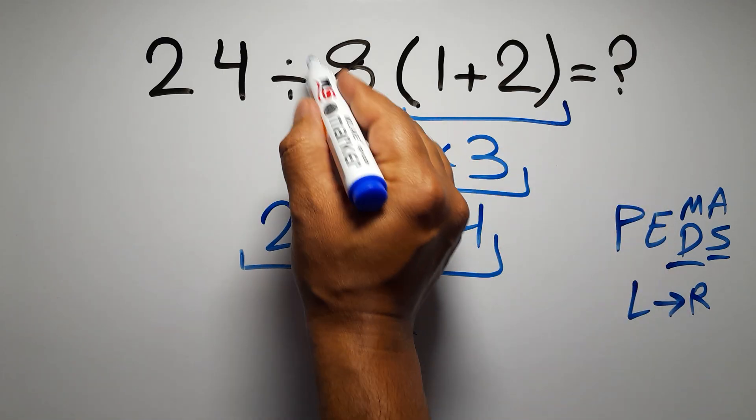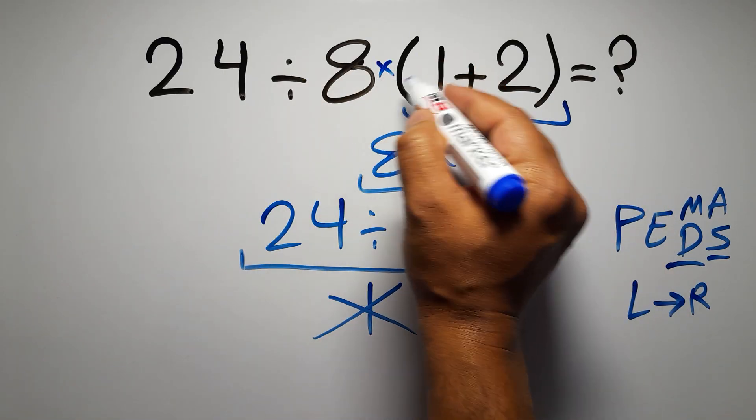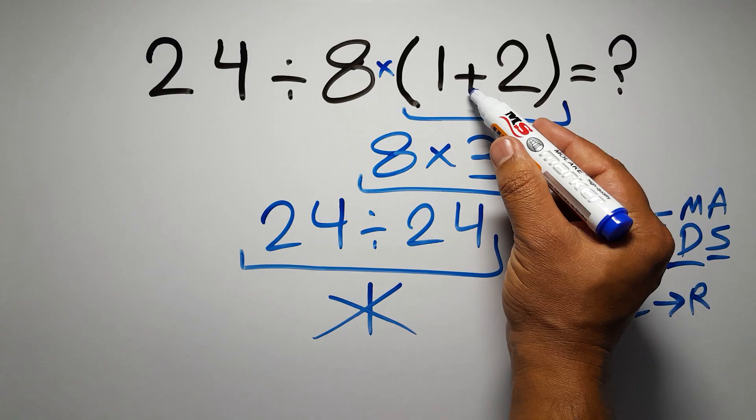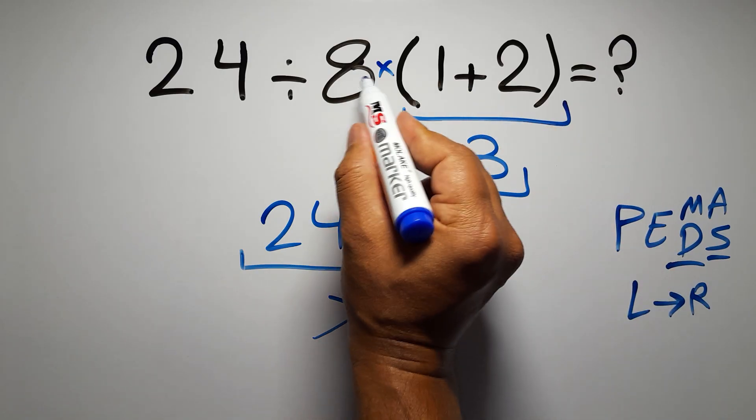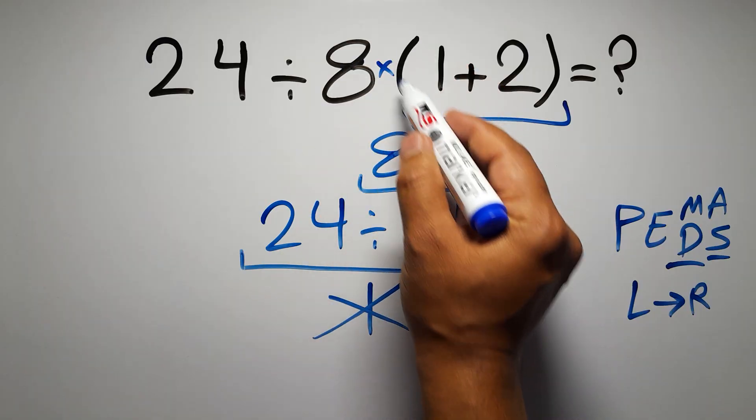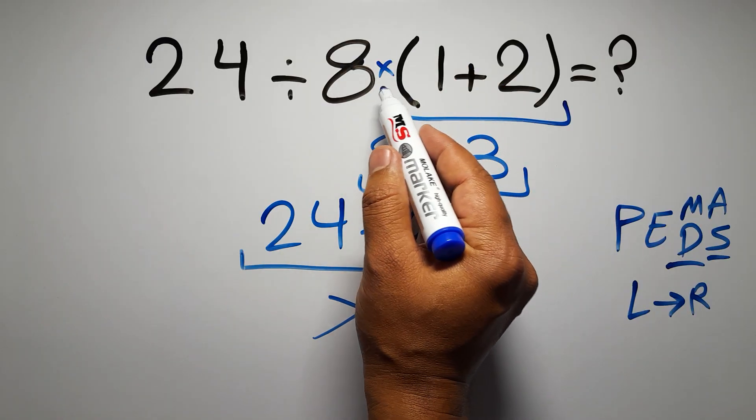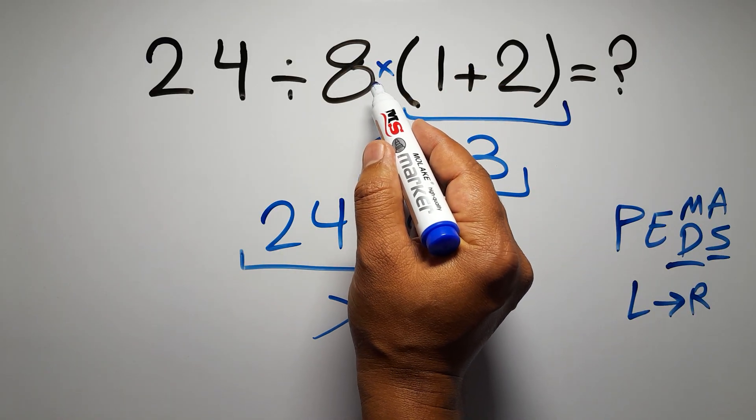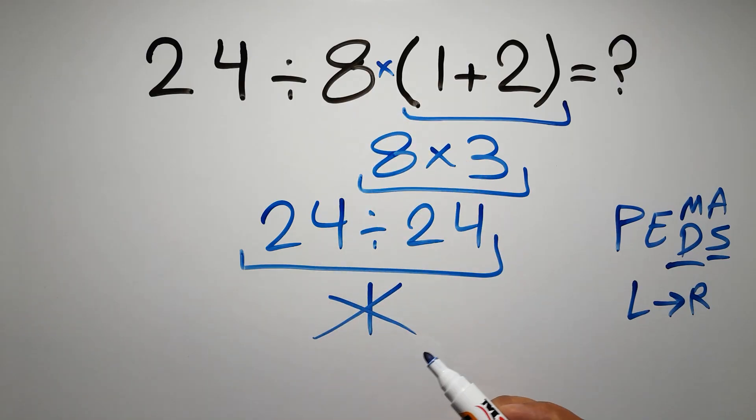In this expression, we have one division, one multiplication, and one parentheses. Inside these parentheses, we have one addition. Here we have a multiplication, because in mathematics, when a number is placed next to parentheses, it means multiplication, and we usually don't write the multiplication sign for brevity.